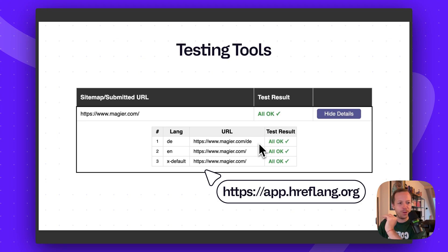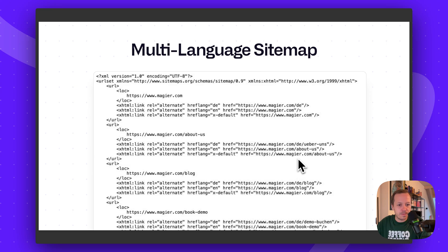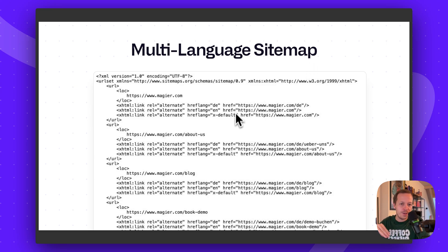One important thing to notice: whenever you use hreflang tags, you need to use them for every single URL on your website. So the main page gets them, but also detail pages — for example, our about us page. The hreflang tag would reference the about us page in English and the /de/über-uns in German, always pointing to the correct URLs. Also, as you can see here, we have a multi-language sitemap. Whenever you are using multi-language URLs and content, make sure to include all URLs in your sitemap to give Google the structure of your website and make their life way easier.